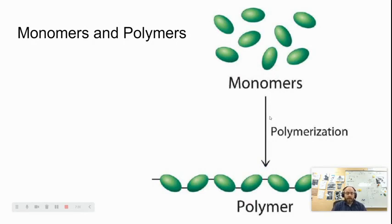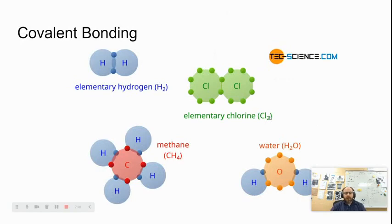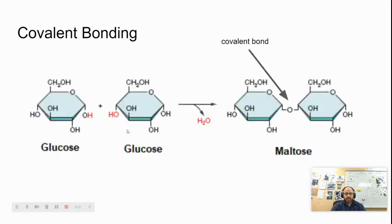That brings us to 1.3: the introduction of biological macromolecules. Macromolecules are made up of monomers, or individual units, and those individual units join together to form polymers. In macromolecules, those monomers join together through covalent bonds — where electrons are shared. The unequal sharing of electrons is called polarity, but in many covalent bonds there is equal sharing. Covalent bonds are the strongest type of chemical bonds we'll talk about in this class.